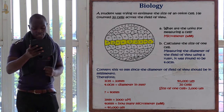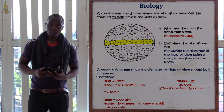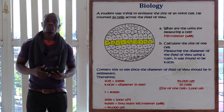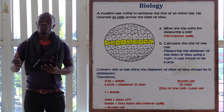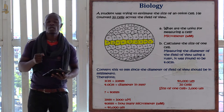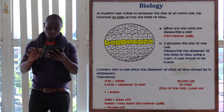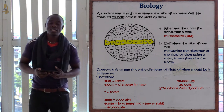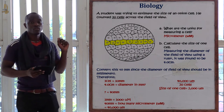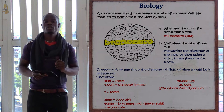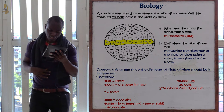To calculate the size of one cell, the field of view is measured in millimeters, and we convert to micrometers. The formula is: 1 millimeter equals 1,000 micrometers. First, we must understand this conversion in order to continue.